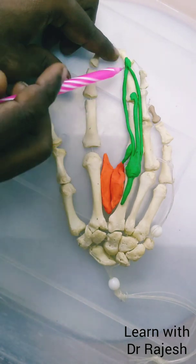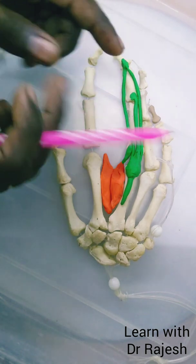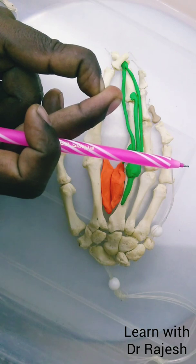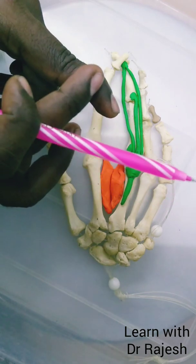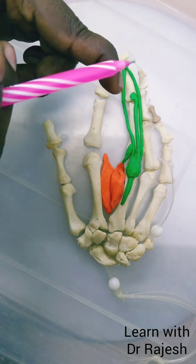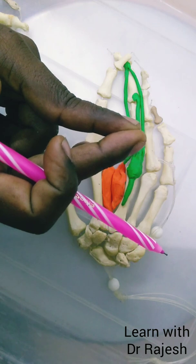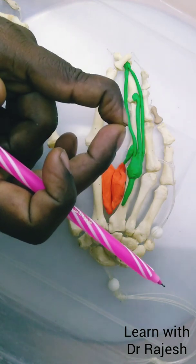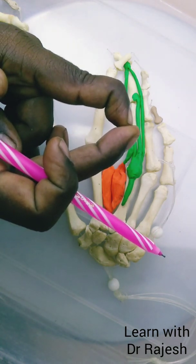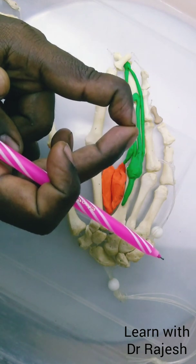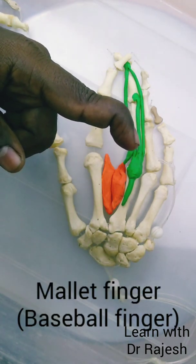Coming to the applied importance: imagine the distal attachment of these lateral slips gets injured, like in case of a blow over the tip of the finger which causes hyperflexion. This distal tendon may get ruptured, so extension at the distal interphalangeal joint does not happen. The result is a flexion deformity of the distal interphalangeal joint — this condition is called mallet finger.